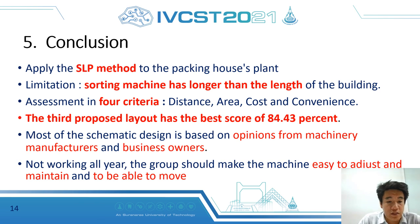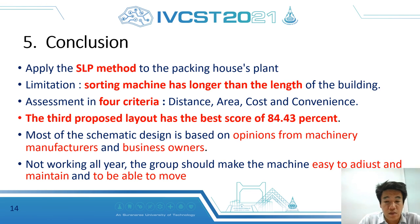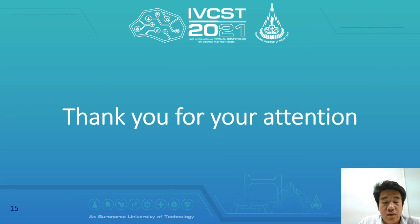We have two research recommendations. First, most packing house systematic designs are based on opinions from machinery manufacturers and business owners; therefore, packing houses should use quantitative analysis or research to decide on using the systematic layout planning principle or other solutions. Second, since the group does not work year-round — most work during the full season, four or five months — the group should make machinery easy to adjust and maintain. Finally, we would like to thank KMK Group in Chantaburi for providing information for this research. Thank you for your attention.